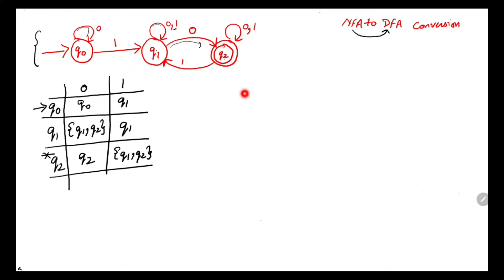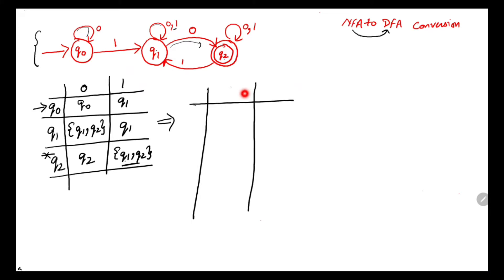A doubt which students generally have is whether to write q1, q2 or q2, q1. The order of the states doesn't matter at all — you can write either q2, q1 or q1, q2 — but you should use a comma in between to denote that these are two separate states. What matters is the members in the set.